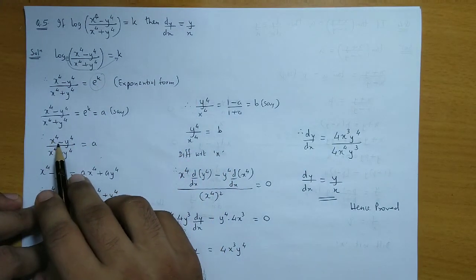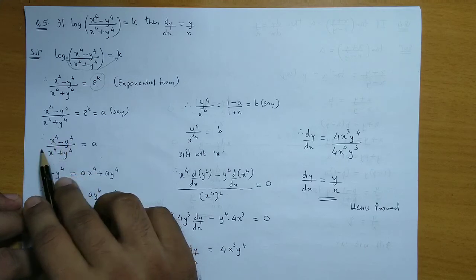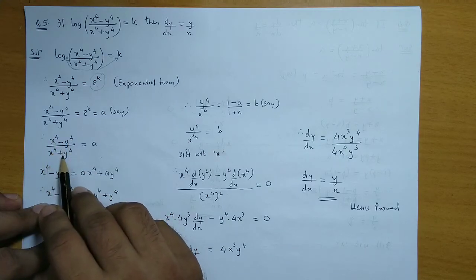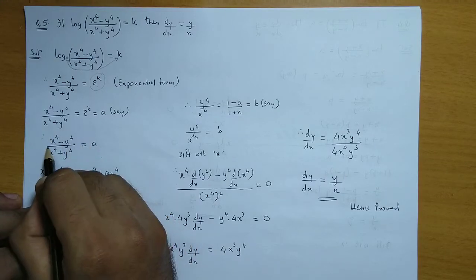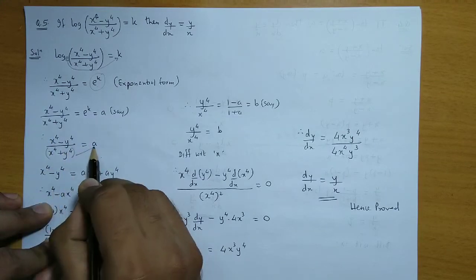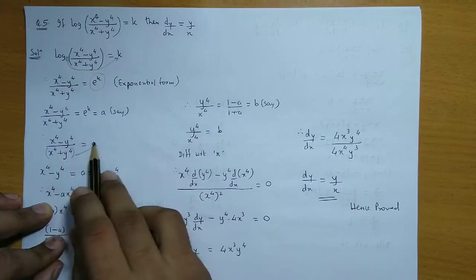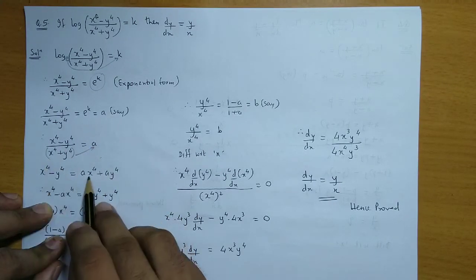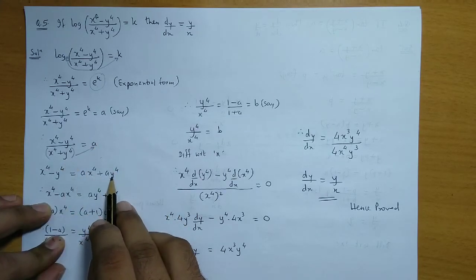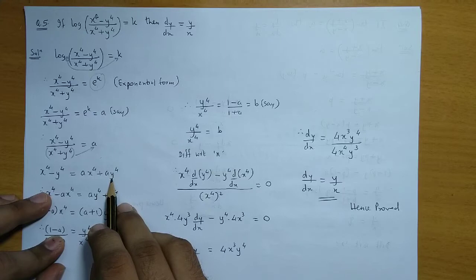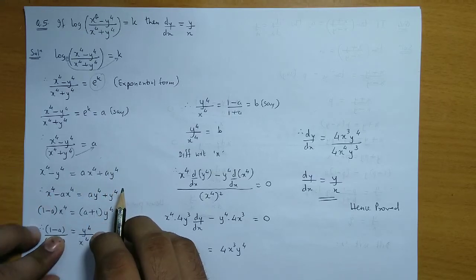So we get (x⁴ - y⁴)/(x⁴ + y⁴) is equal to a. Now we multiply this denominator with a on this side. And if you open the brackets, we get a times x⁴ plus a times y⁴. Now, like the previous sum, we sort out x and y terms on both sides.